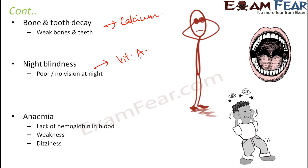Anemia is the condition when there is insufficient hemoglobin in our blood. Hemoglobin is the red-colored component in blood — due to its presence, blood is red — and its purpose is to carry oxygen from one part of the body to another. Each and every cell inside our body needs oxygen to do their job. When there is less hemoglobin in the blood, there is less transportation of oxygen to the different cells, and this can lead to weakness and dizziness because the cells will not be able to do their job appropriately.